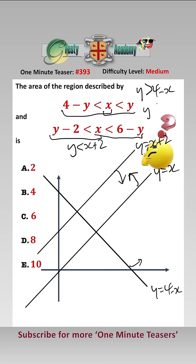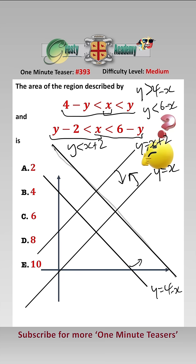And finally this one we can rewrite as y has got to be less than 6 minus x, so drawing y equals 6 minus x in — that's y equals 6 minus x.